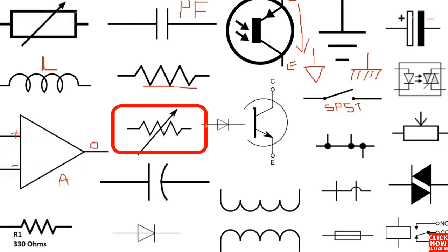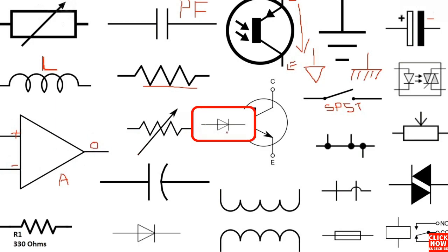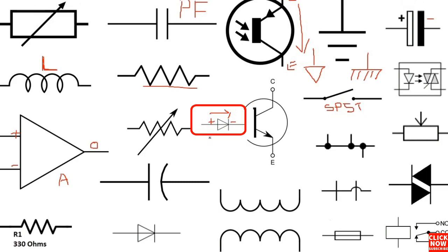As we have seen before, this is a variable resistor, and here we have the diode. This is the symbol for the diode — here we have the cathode, which refers to the negative terminal, and the anode, which is the positive terminal. The diode lets current pass in one direction from anode to cathode, and blocks current in the other direction.